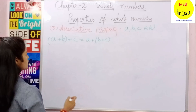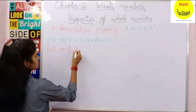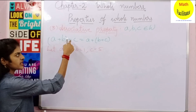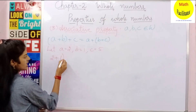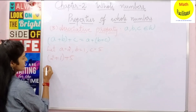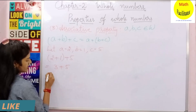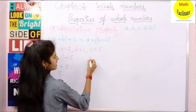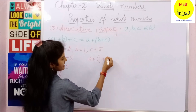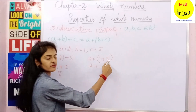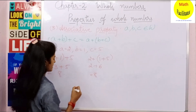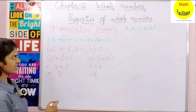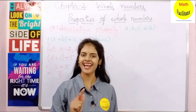Let us take an example. Let A equal to 2, B equal to 1, and C equal to 5. A plus (B plus C): 2 plus (1 plus 5) — that is 2 plus 6 which is 8. Now (A plus B) plus C: (2 plus 1) plus 5 — that is 3 plus 5 which is 8. So A plus (B plus C) equals (A plus B) plus C. Associative property is satisfied under addition.